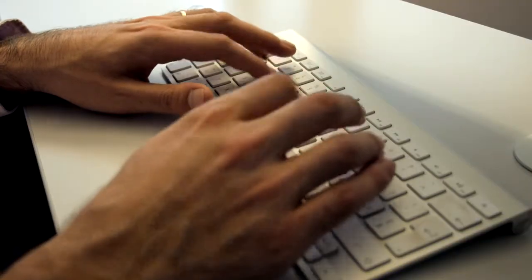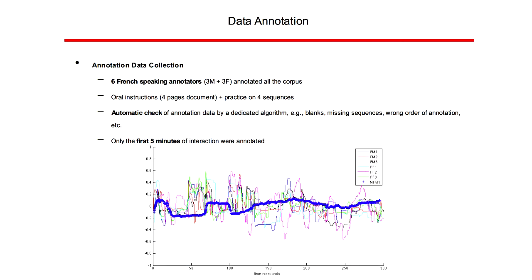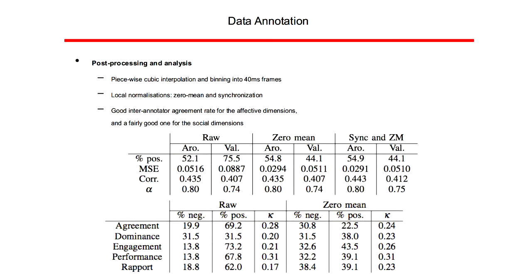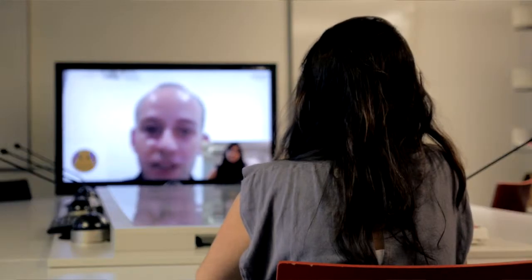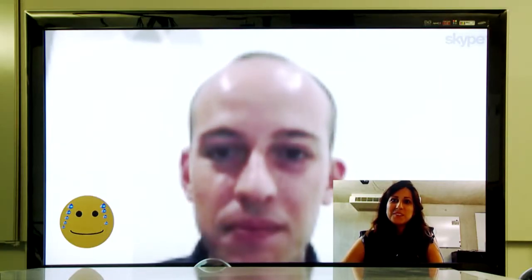A second tool concerns the visualization of the information, because when we know which emotion has been produced, it is not easy to know the best way to represent this information. We optimize the performance of the automatic emotion recognition system by analysis of existing databases. Then, when the system performs well enough, we integrate this tool in a real setup to see whether it can be enhanced further for remote interaction.